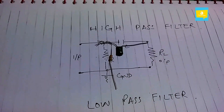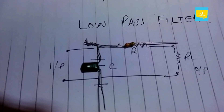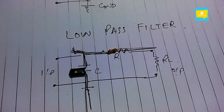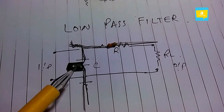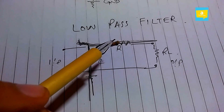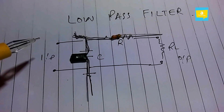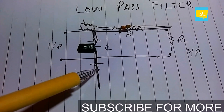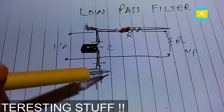Now let's talk about the low pass filter. Here we have the low pass filter — I have placed the capacitor and the resistor according to the schematic diagram. You will give input at this point and this point, and you will get output from across the resistor and the common point.